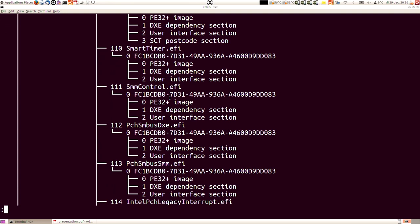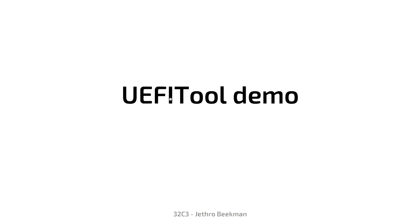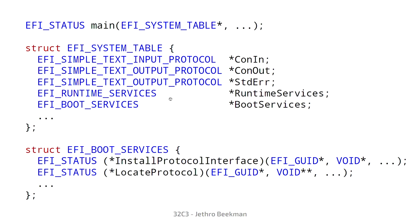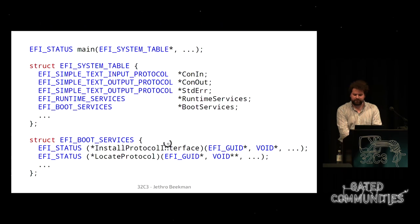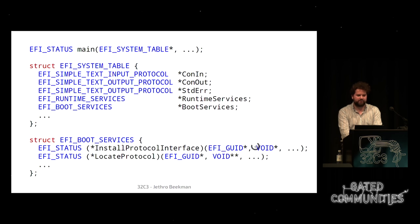You might think you can run these modules, and that is true. Each module has an entry point in main, and the main function gets passed a pointer to the system table. The system table contains pointers to other structures — for example, console in, console out, standard error for text I/O, and also the boot services structure. The boot services structure contains function pointers including install protocol interface and locate protocol. Install protocol interface allows a module to install a protocol interface specified by a particular GUID, and the interface is then specified by a pointer. Another module can then call locate protocol with the same GUID to receive a pointer to that interface.